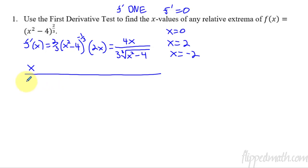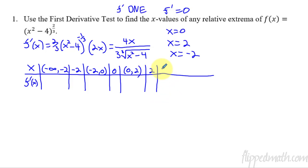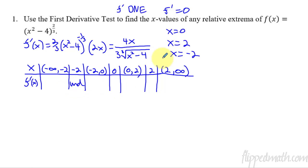Now you set up your sign chart. I'm going to have an x row and an f prime of x row. Starting with the smallest, I have the interval from negative infinity up to negative two, then the point negative two, then from negative two up to zero, then zero, then from zero up to two, then two, and finally from two to infinity. At negative two and two, the derivative is undefined or does not exist. At zero, the derivative is zero. Now we use test points to figure out if the derivative is positive or negative in these intervals.